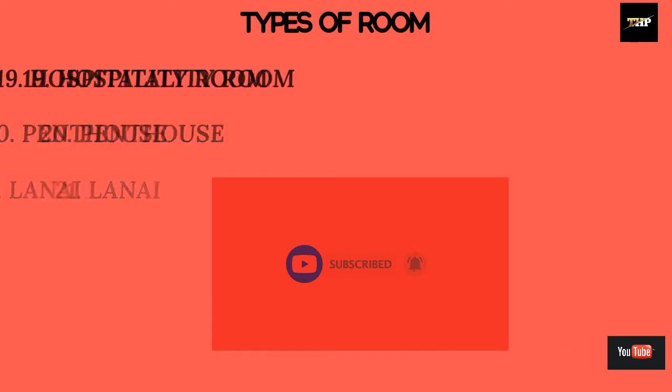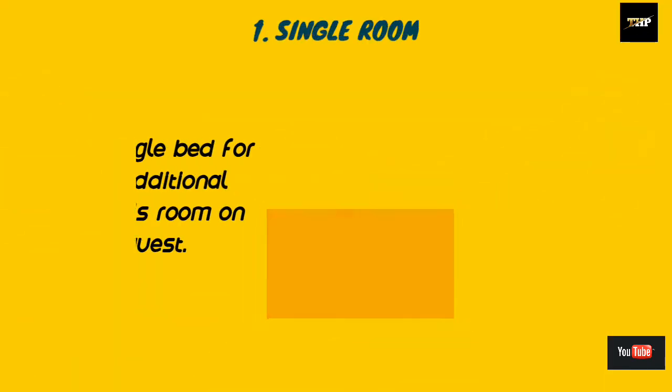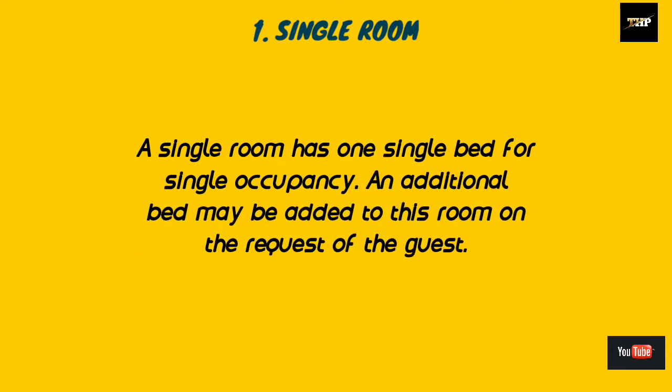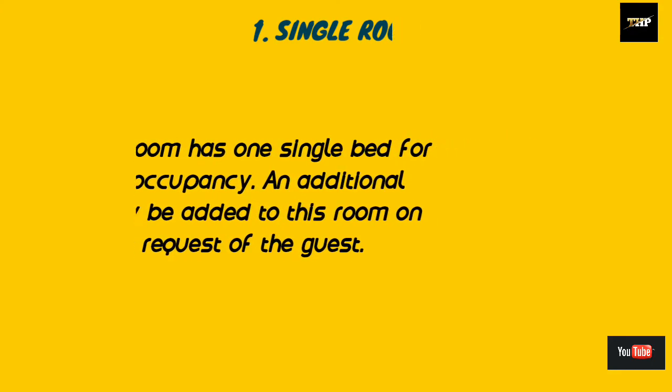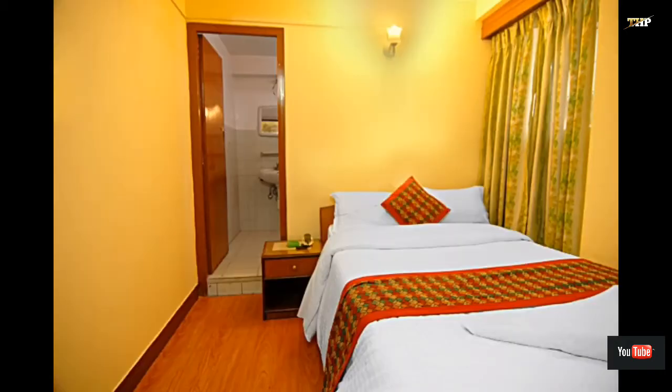The first one is the single room. A single room has a single bed for single occupancy. An additional bed may be added to this room on the request of a guest and charged accordingly. Here are photographs of a single room, in which different types of services are given to the guest.